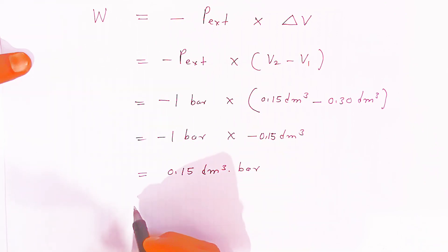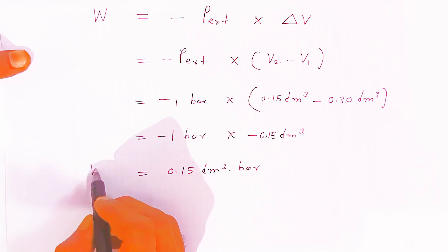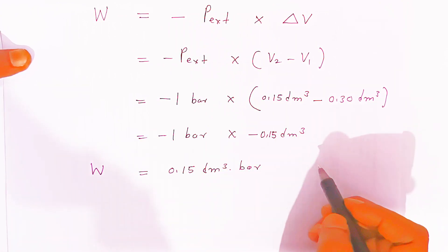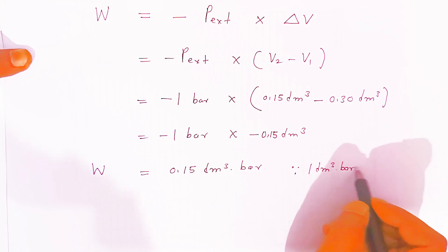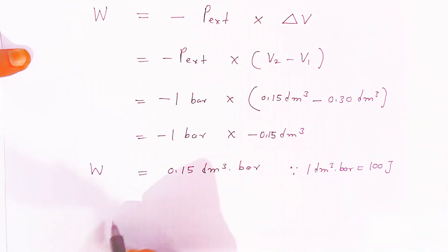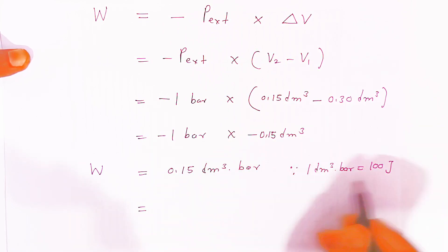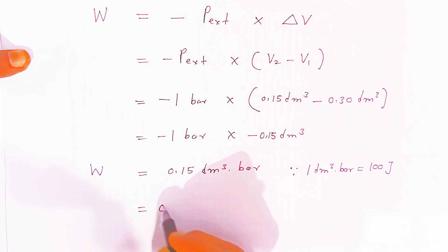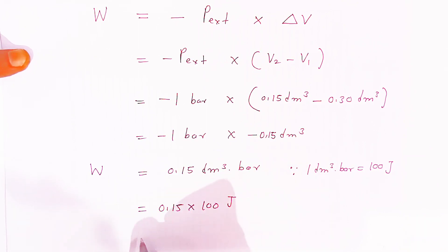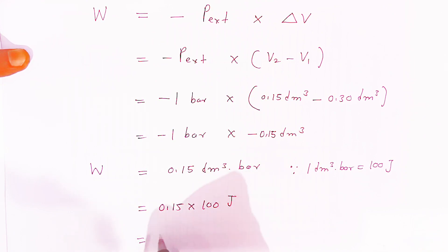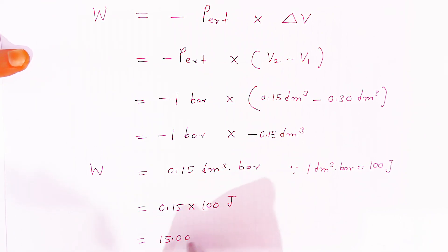This is the work done in dm³·bar. But the question asks for Joules. Since 1 dm³·bar equals 100 Joules, you multiply 0.15 by 100, which converts it into Joules. The decimal is removed, giving the work done as 15 Joules.